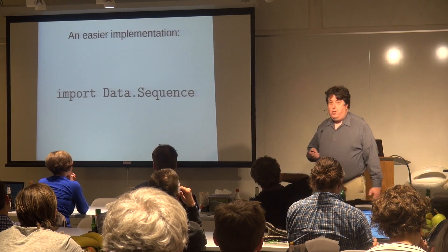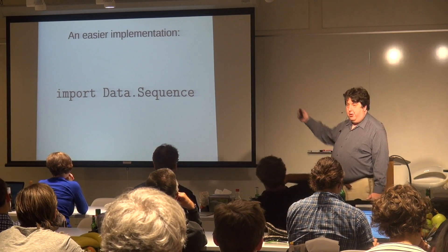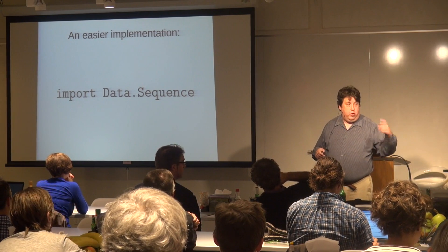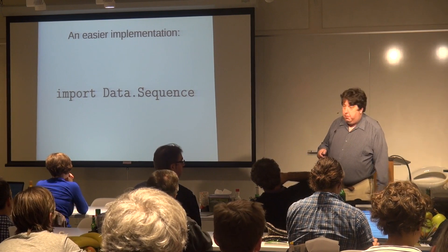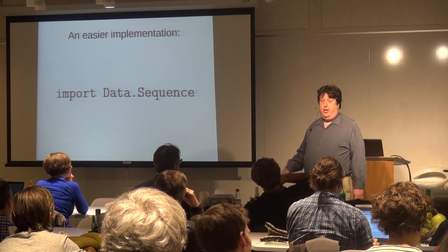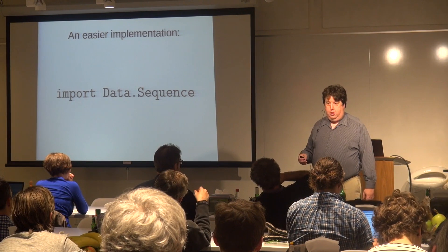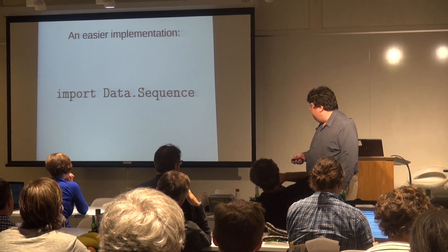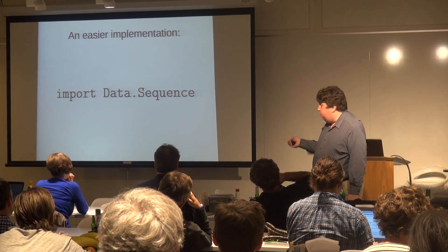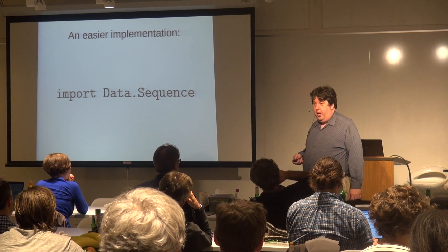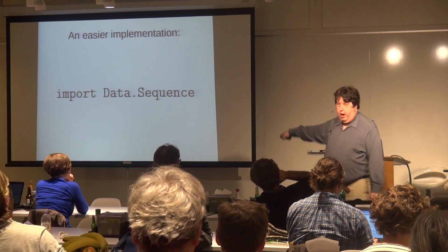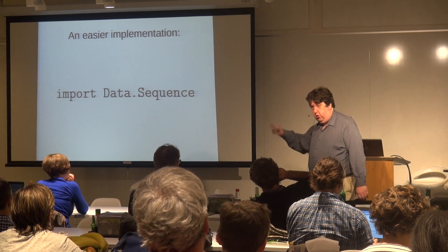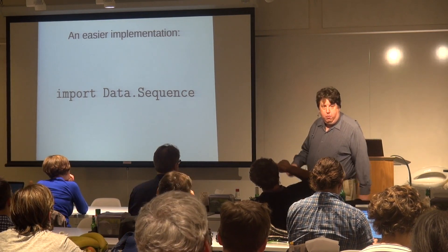The easier implementation of this, by the way: import Data.Sequence. There is a standard library. It actually implements two-three trees — not two-three-four trees — I didn't realize that until after presenting the whole slide. But that's how you implement it the correct way. It's a very rich library with a lot of operations: it's a Functor, it's a Traversable, it's everything.